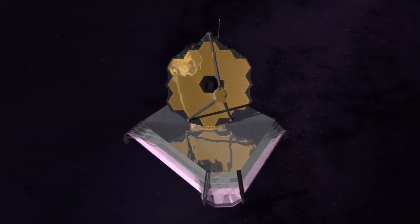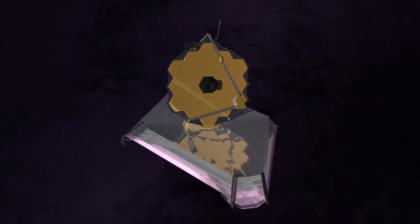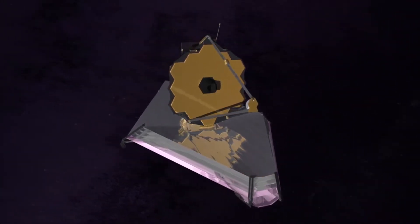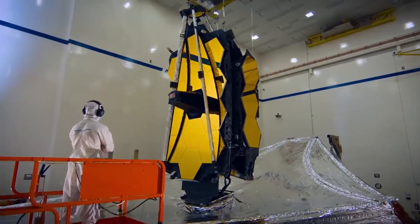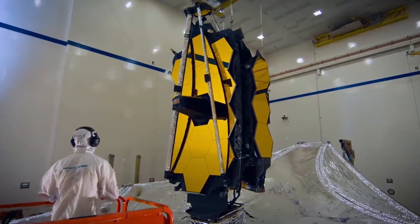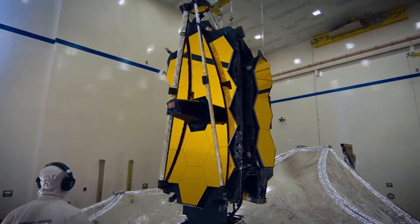The sensitivity of the telescope, or how much detail it can see, is directly related to the size of the mirror that collects light from the observed objects. A larger surface area collects more light.